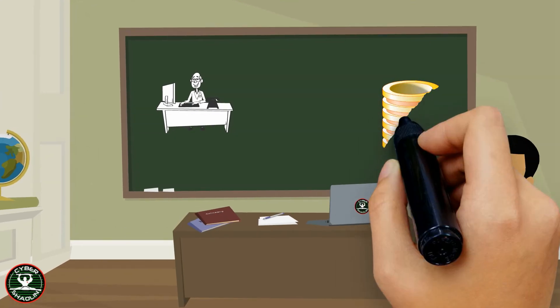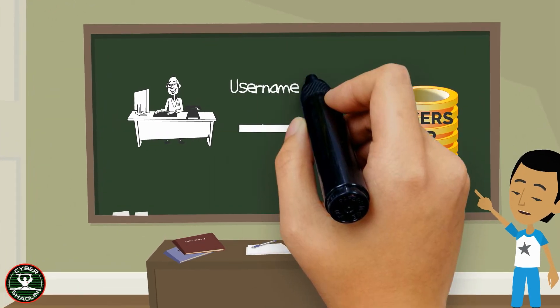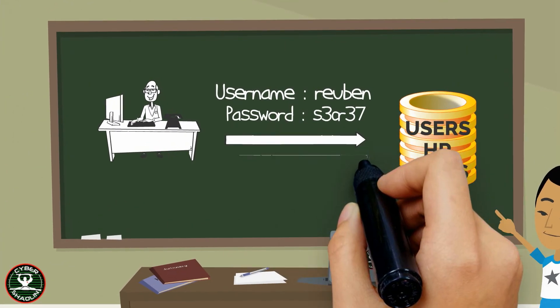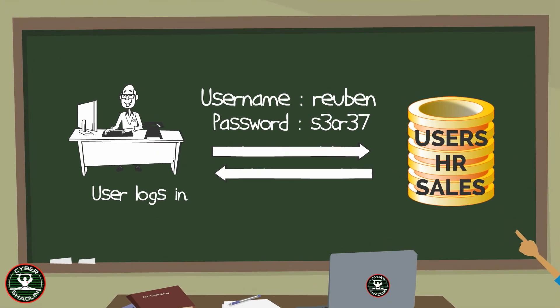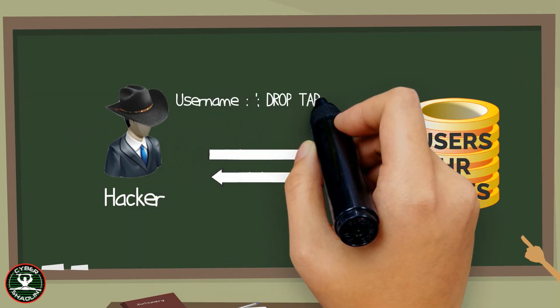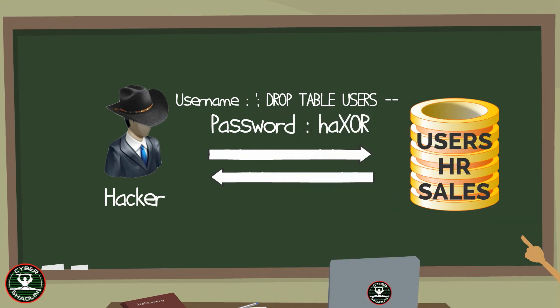When the data is in the form that the system expects, it is all good. But if the hacker is able to inject commands — for example, drop a table — in the form of data, then we have a problem.